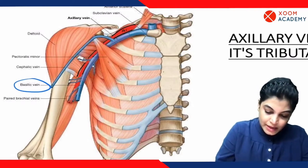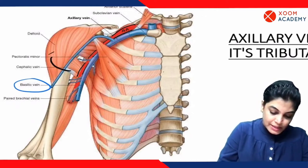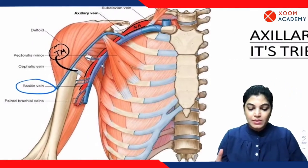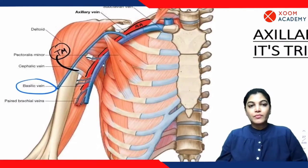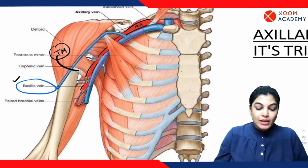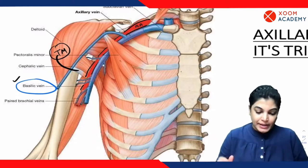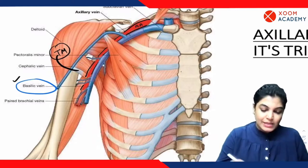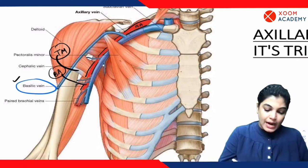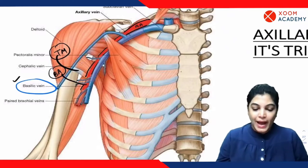Here this is AA, the axillary artery, and here at the level of teres major muscle (TM) it becomes the brachial artery. Regarding the formation: the axillary vein is formed by joining two veins. The basilic vein joins with the venae comitantes surrounding the brachial artery. So the venae comitantes of the brachial artery joining with the basilic vein leads to the formation of the axillary vein.